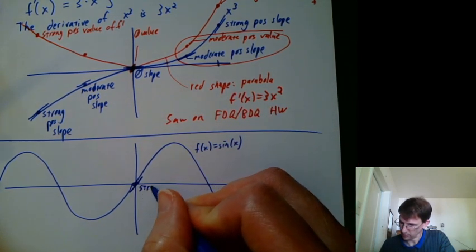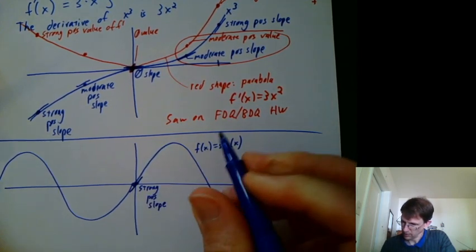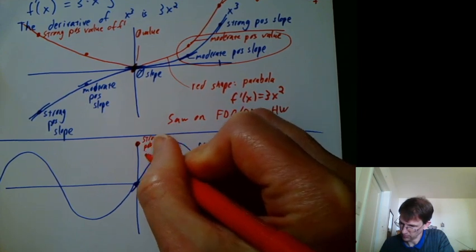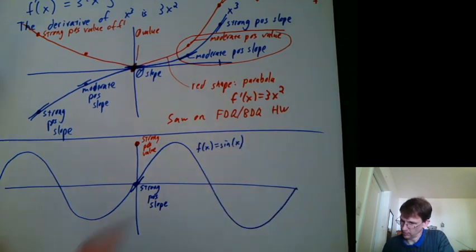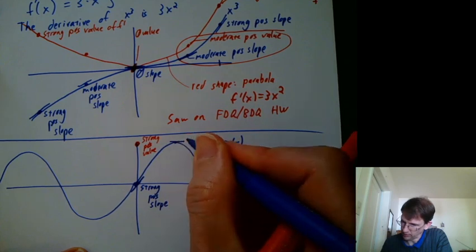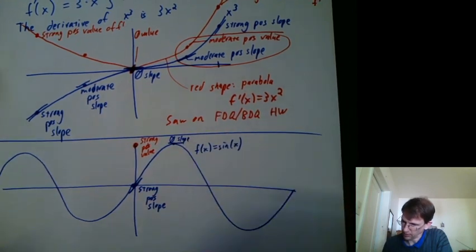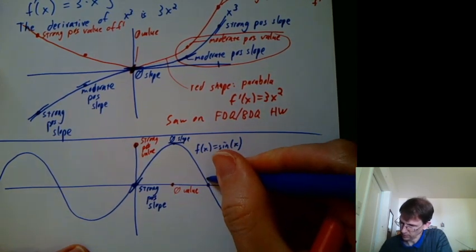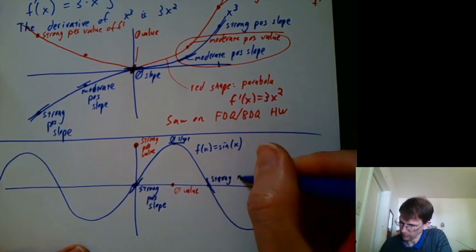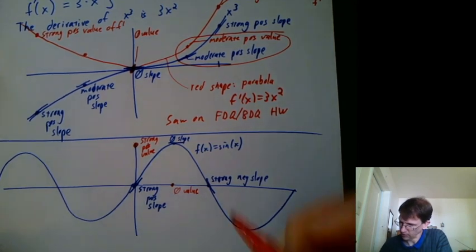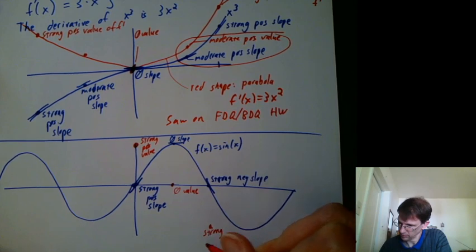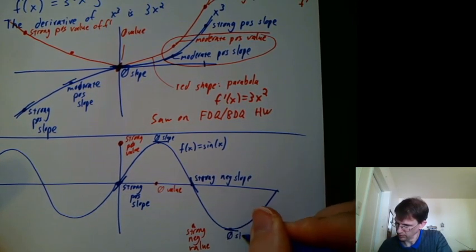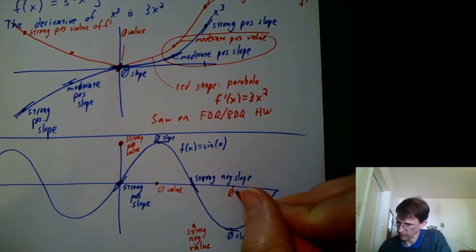How about here? Would you say that's a strong positive slope? And so the value of the derivative is a strong positive value. What else can we do? How about over here? The tangent line would be flat. So that would be zero slope. And the value of the derivative would be zero. How about over here? That's a strong negative slope. And so I would end up with a strong negative value here.